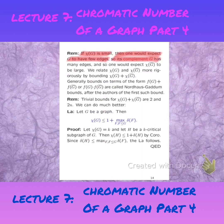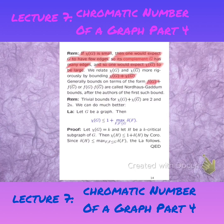Its complement will have many edges, and so one would expect the chromatic number of the complement to be large. That brings us to the following question: what is the maximum value that the sum between the chromatic numbers of G and the complement can become? That is known as a Nordhaus-Gaddum-type problem, where you look at the parameter of a graph and its complement, looking at the sum and the product maximum values. Nordhaus-Gaddum results are quite widespread in graph theory, specifically with colorings.